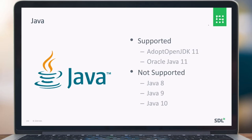For Java, we support OpenJDK 11 and Oracle Java 11. What we no longer support are Java 8, 9, and 10. OpenJDK 11 is verified with our Solr/Jetty in the Data Open Toolkit and works the same as Oracle Java 11.